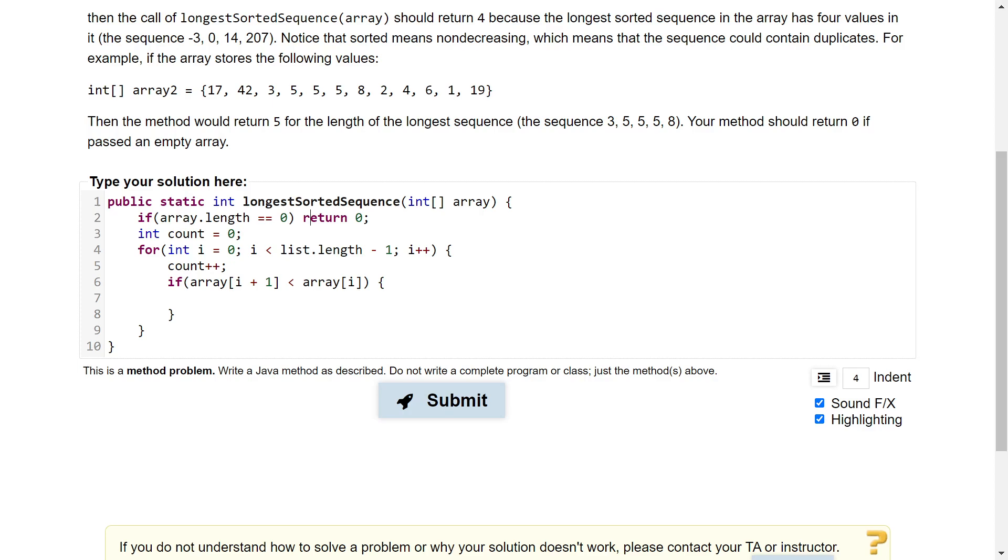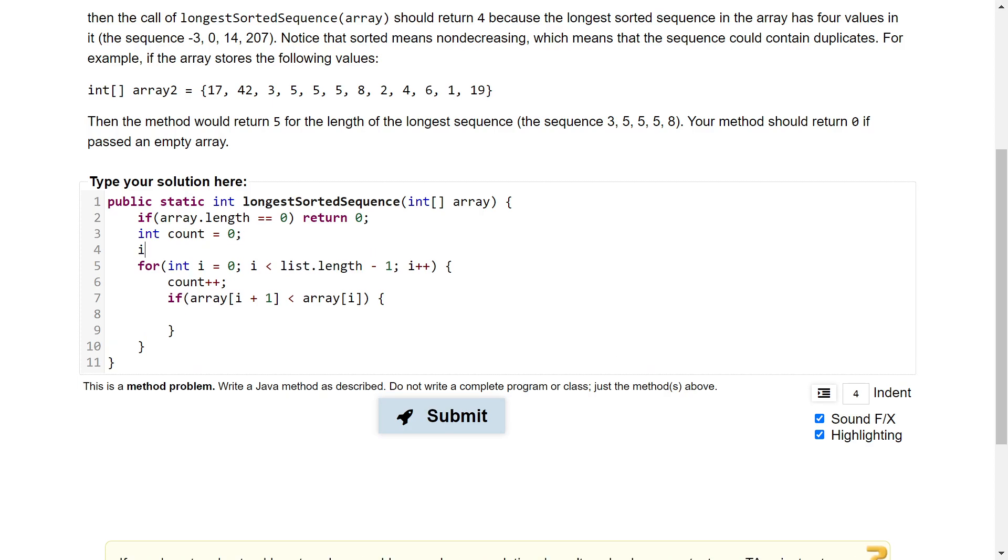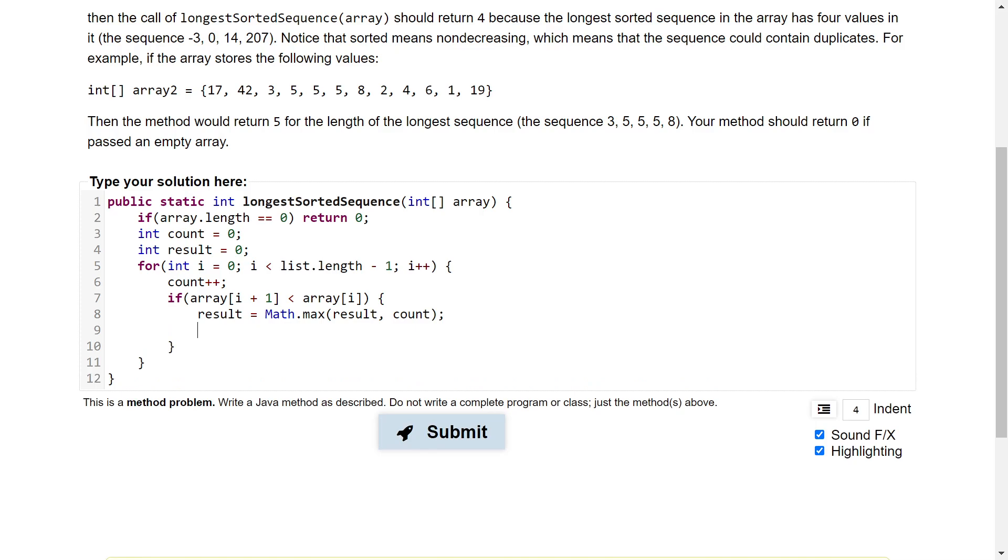We're going to go ahead and actually create another variable called result. And this result variable is going to represent the longest sequence of numbers we have so far. So let's go ahead, change result. And result is going to be math dot max result count. So what we're doing is we're taking the maximum of result and count. And the reason for that is because we're looking for that longest sequence, right? So either the sequence that we just looked at or the sequence that's already stored in result, which one's longer? And that's what this line is taking care of.